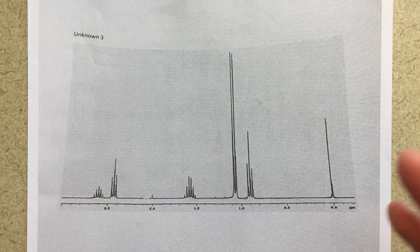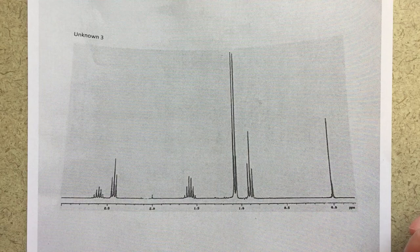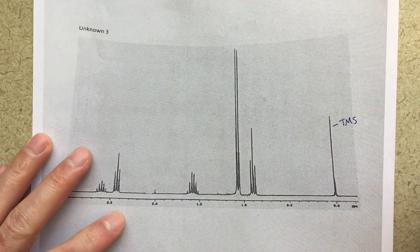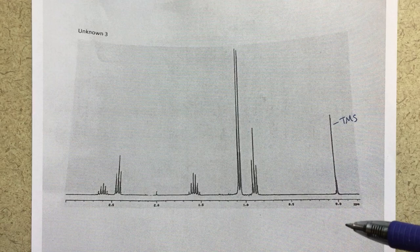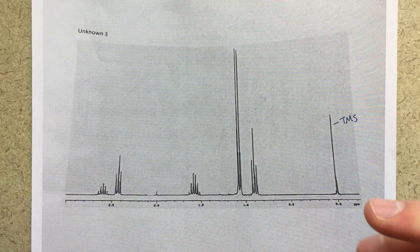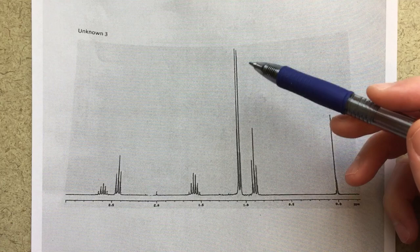Now let's go back and start from the beginning. We'll look at our proton NMR and start putting the structure together based on our COSY NMR, going back and forth as we go. The first thing I'm going to label is our TMS peak at 0 — we can label that and not worry about it anymore. Then I've got five distinct signals that I want to think about and identify.